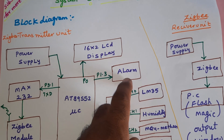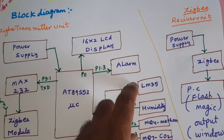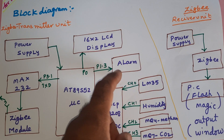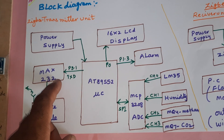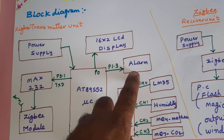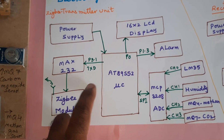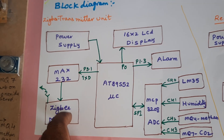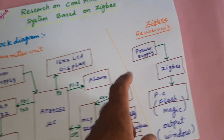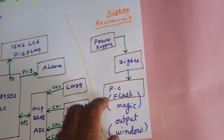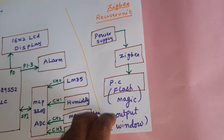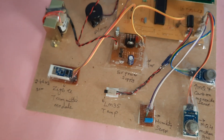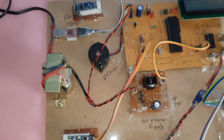If any sensor is detecting continuously after the 10th count, a continuous alarm will turn on as an indicator. There is also a MAX232 Zigbee module that transmits data through Zigbee, and the Zigbee receiver is connected to the PC hyper terminal and Flash Magic software. Now let us go into the hardware.